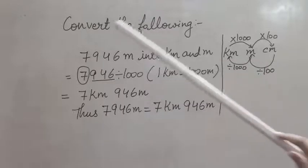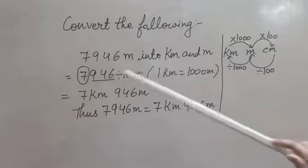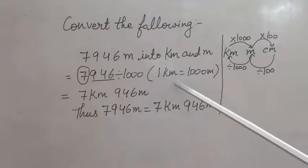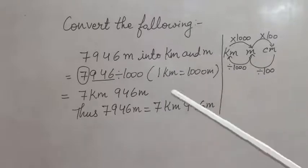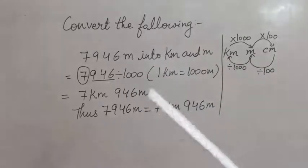So here I have divided 7946 with 1000. Why with 1000? Because I know that one kilometer is equals to 1000 meter. Yes, and you all know how to divide with 10, 100 and 1000. This I have already explained.